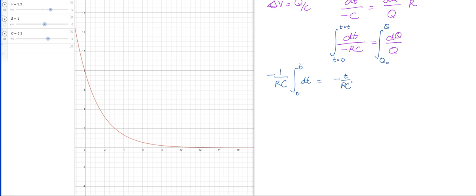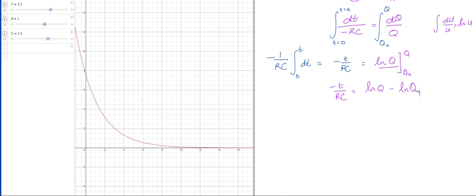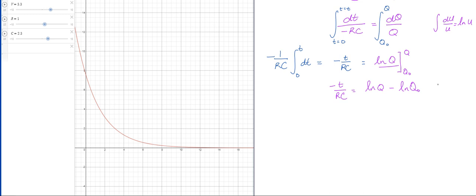This side, remembering some of these identities here, integral of du over u is just the natural log of u. So on this side it's going to give me the natural log of Q, and that's going to be evaluated from Q_naught to Q. So I have -t/RC is equal to the natural log of Q minus the natural log of Q_naught. I can simplify this expression, so -t/RC is equal to natural log of Q over Q_naught like this.